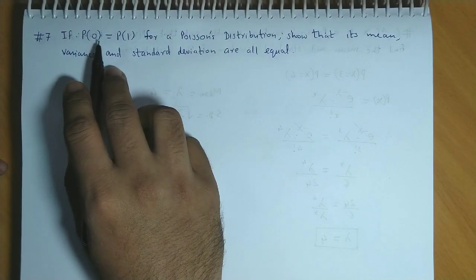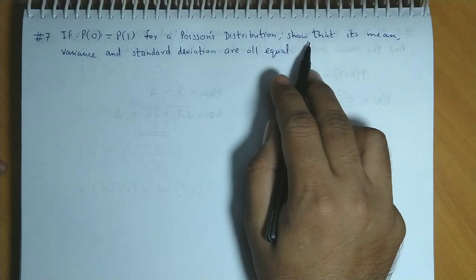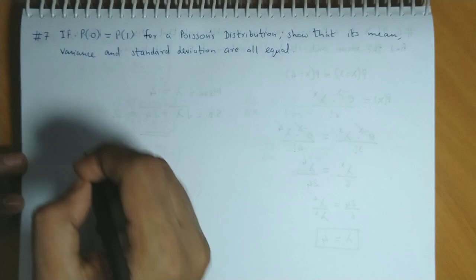If probability at 0 is equal to probability at 1 for a Poisson's distribution, show that its mean, variance and standard deviation all are equal.